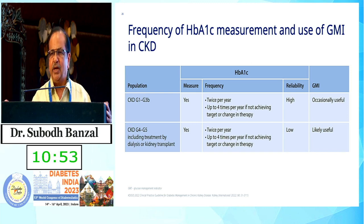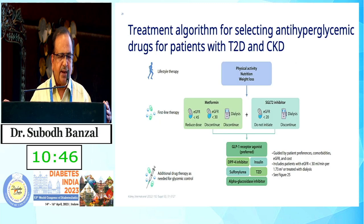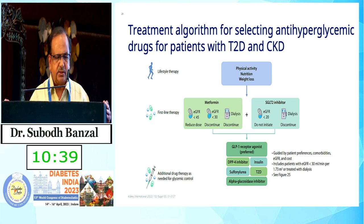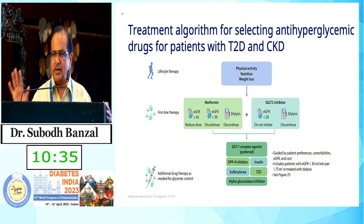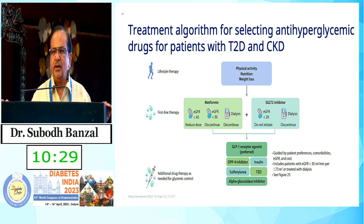We should check A1C two to three times a year in these patients — whether they have CKD stage 1 to 3 or even stage 4 to 5 — and every three months if possible. The treatment algorithm: lifestyle modification, nutrition, and weight loss first; continue metformin up to GFR 45, reduce dose between 45 and 30, and stop below 30 if they have anorexia problems.